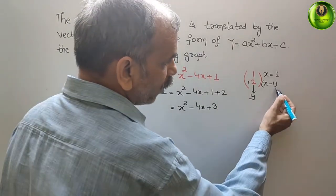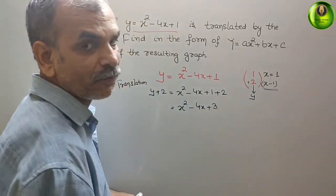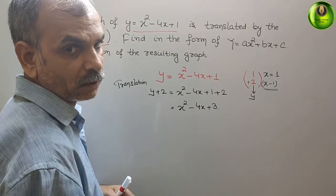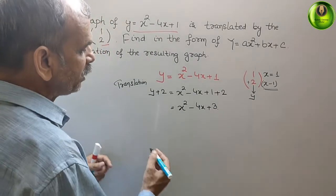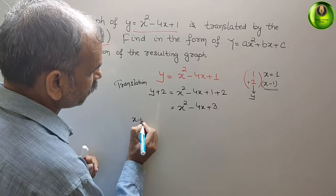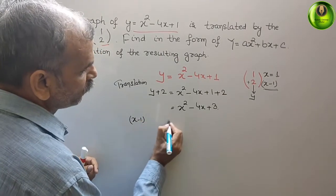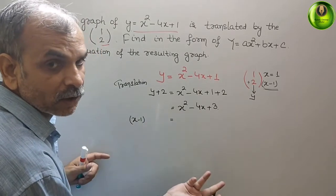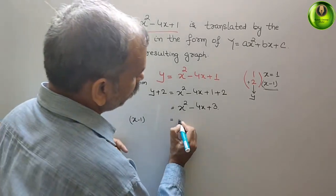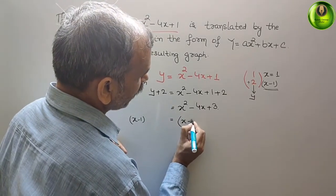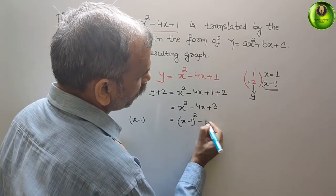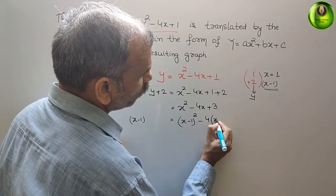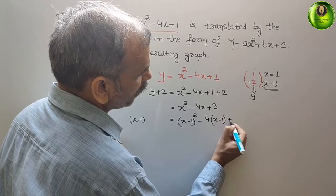Now, we will come for translation of x, x minus 1. That means that, in x minus 1 translation, what happens? In place of x, we will write x minus 1. So, here, it will be x minus 1 whole square minus 4 into x minus 1 plus 3.